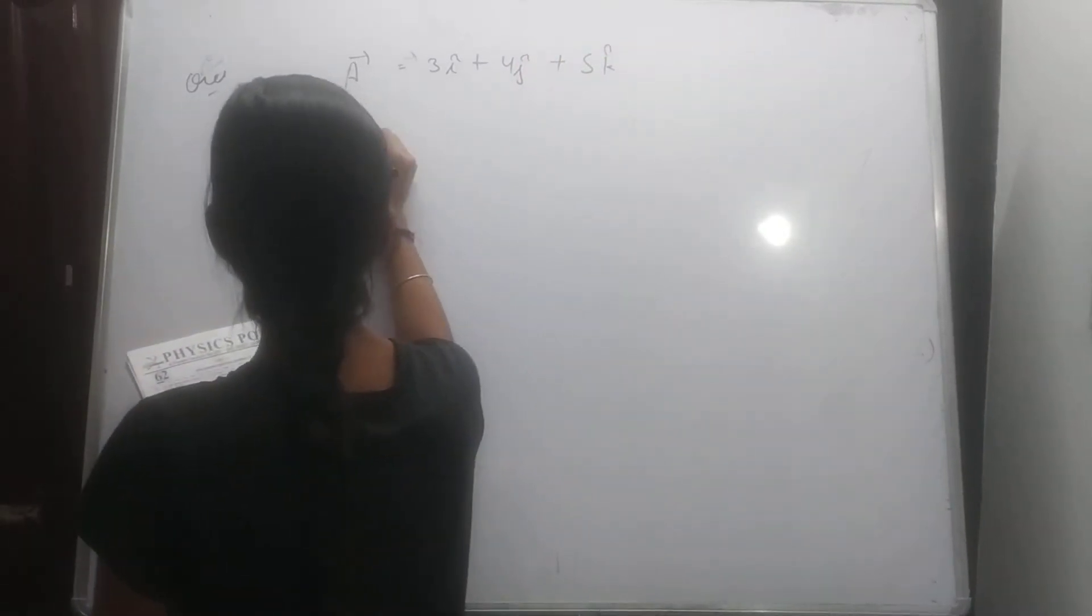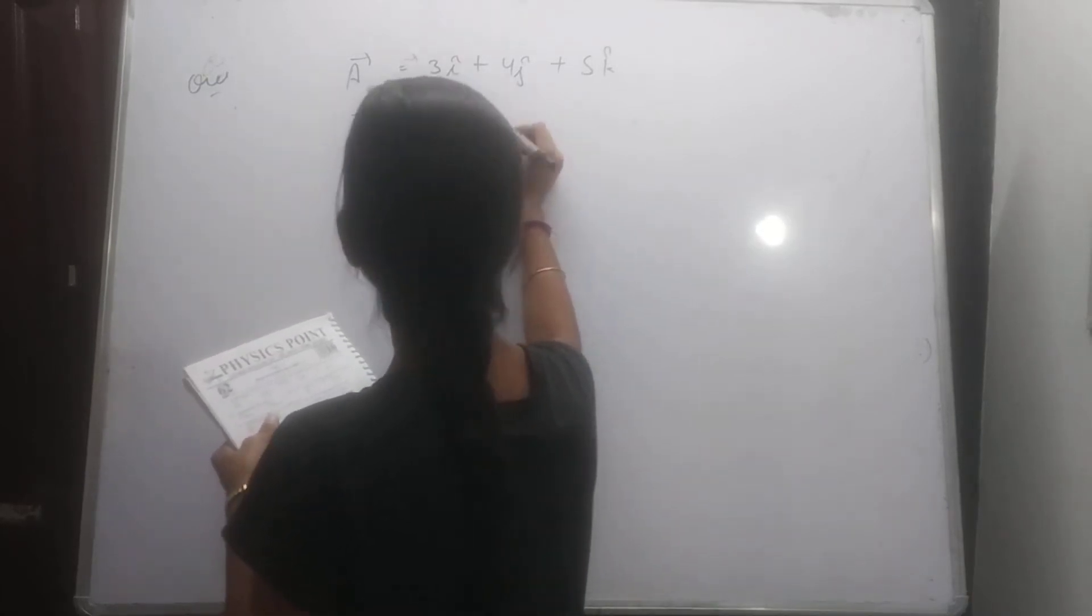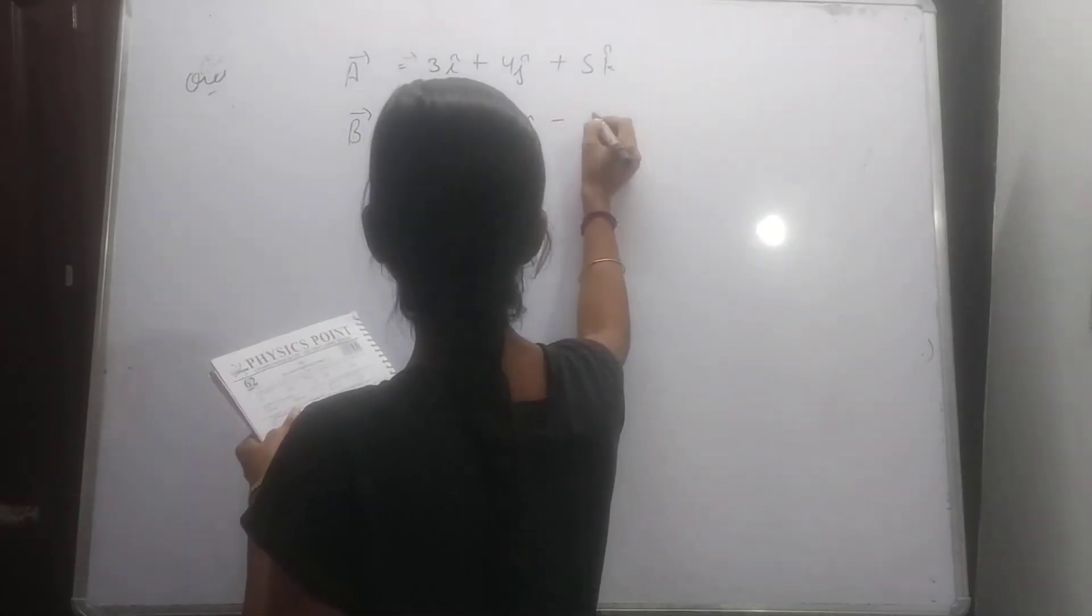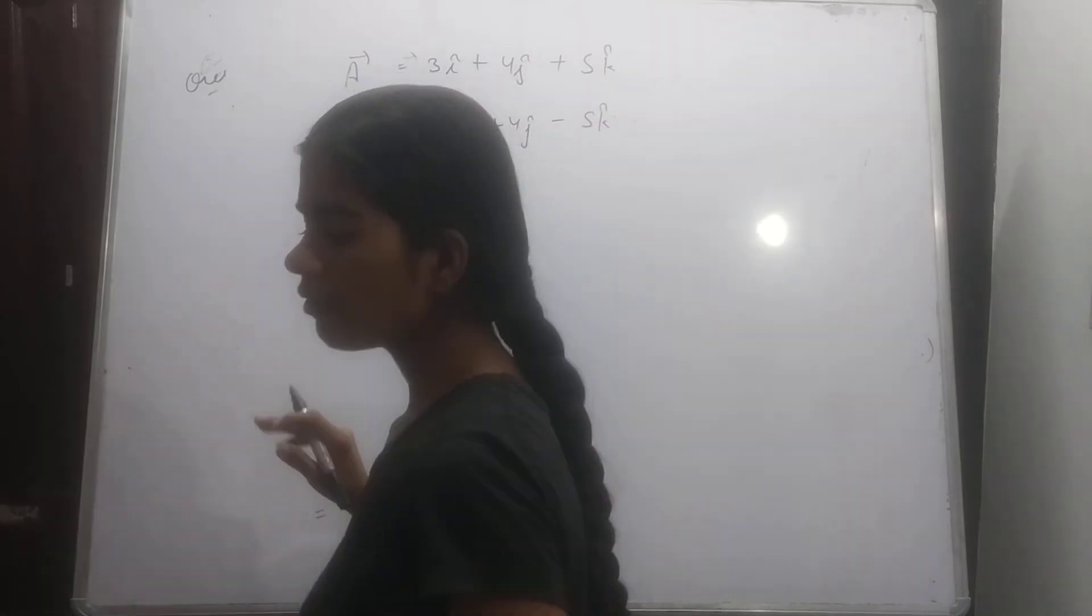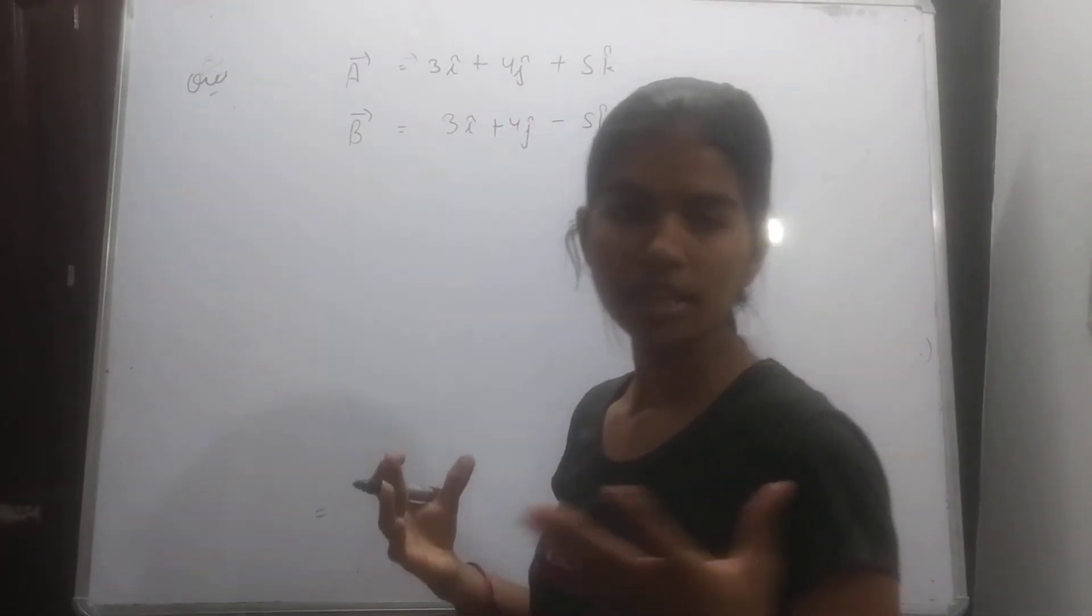And vector b hume de rakha hai, vector b equal to 3i cap, plus 4j cap, minus 5k cap. That is the vector of a vector and b vector, hume de rakha hai.